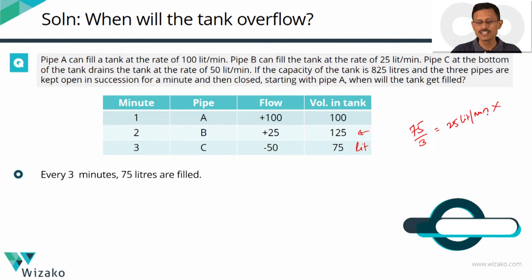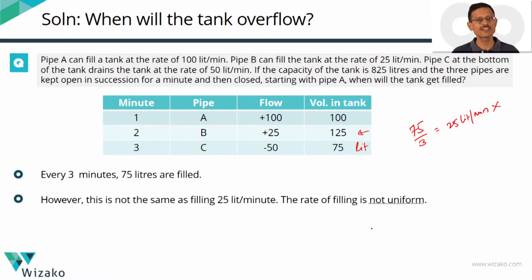No you cannot. 25 liters per minute essentially means that at the end of each minute you add 25 liters to the tank. Here that's not what is happening. At the end of one minute you actually add 100. At the end of minute two you probably come to this rate of 25 per minute. At the end of minute three you're actually taking away water from the tank. So these questions thinking of it as 25 liters per minute is incorrect. You have to think of it only in cycles of however many pipes are there. In this case it is three pipes and each pipe is kept open for a minute. So we'll think of it in terms of cycles of three minutes.